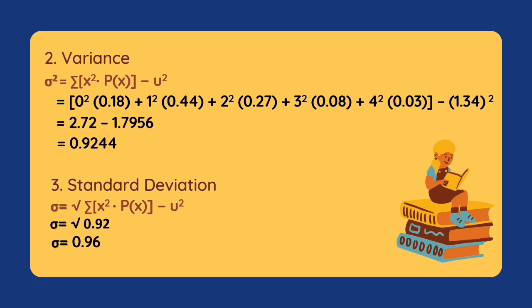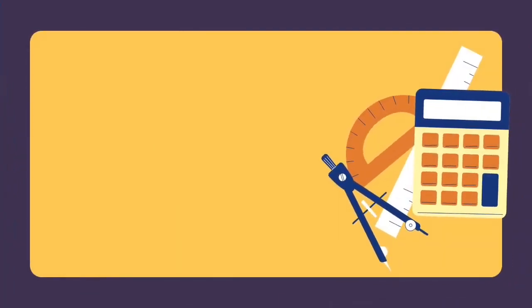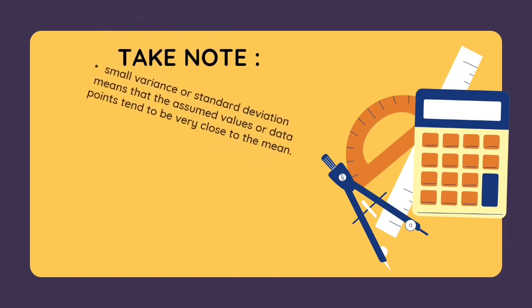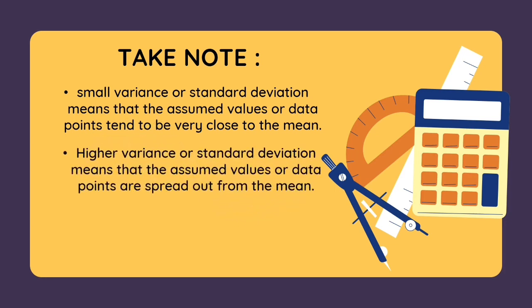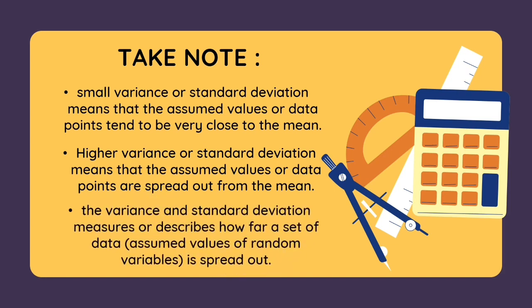We should also remember that the variance and standard deviation of a discrete random variable may be interpreted as measures of variability of the values. Small variance or standard deviation means that the assumed values or data points tend to be very close to the mean, while higher variance or standard deviation means that the assumed values or data points are spread out from the mean. The variance and standard deviation describe how far a set of data or the assumed values of random variables is spread out.